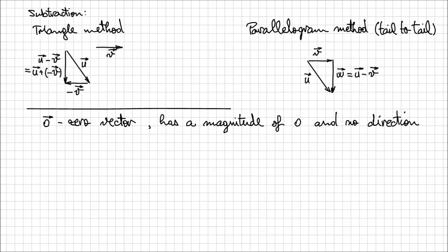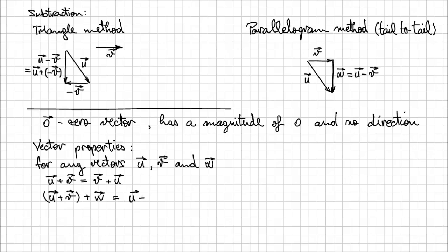Before we conclude this lesson, let's actually have a look at some vector properties as well. So for any vectors u, v, and w, we know that u plus v equals to v plus u. This is the commutative property. We also know that if you have u plus v, an addition of two vectors that we perform first, plus another vector w, it's equivalent to u plus the resultant of v plus w. And this is the associative property.